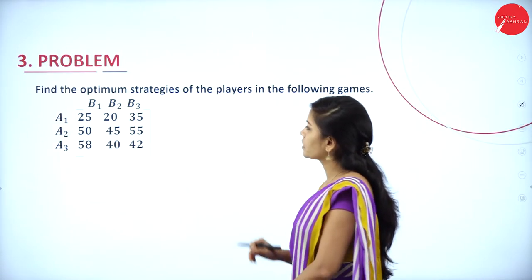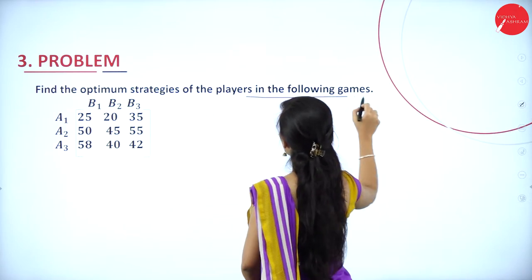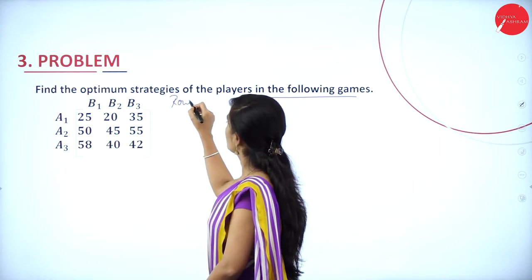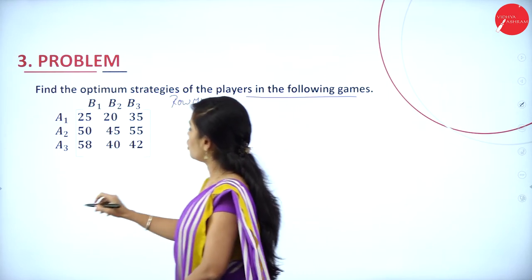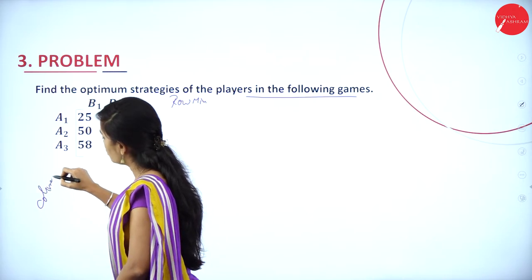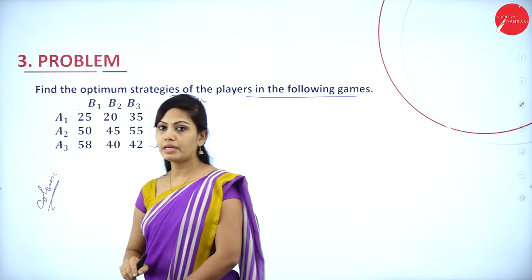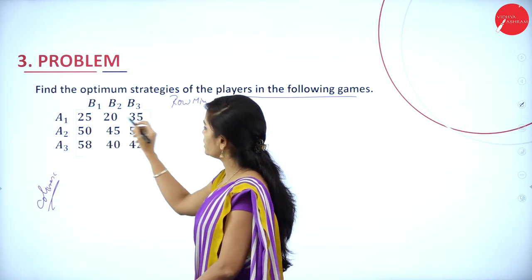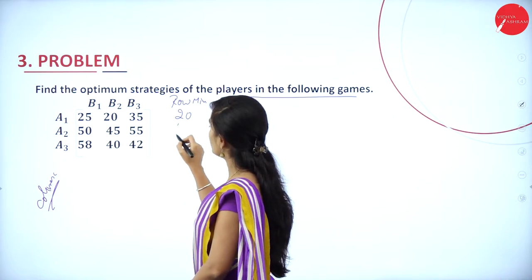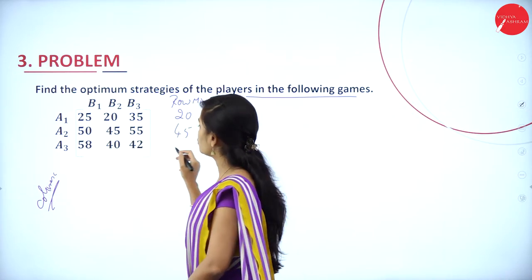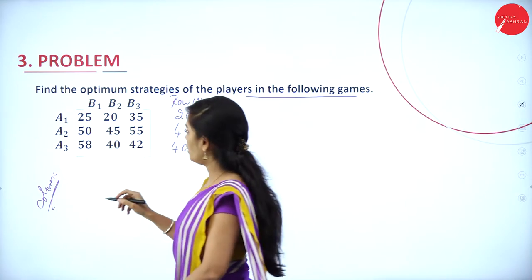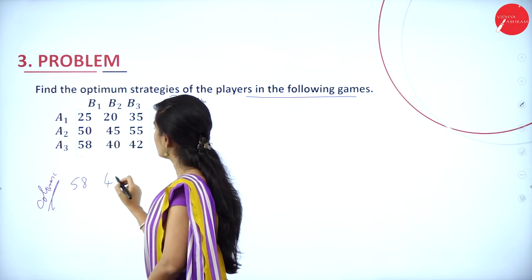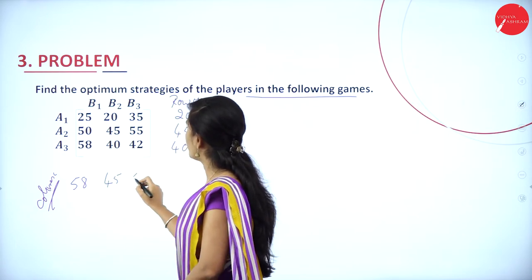Next problem: find the optimal strategies of the players in the following games. First step — row minima and column maxima. In the first row the least value is 20, in the second row it is 45, and in the third row it is 40. In the columns, the highest values are 58, 45, and 55.